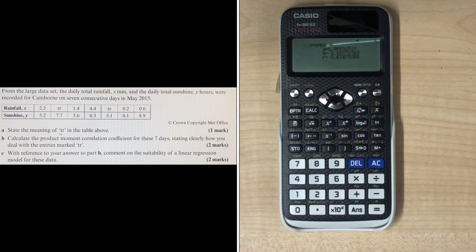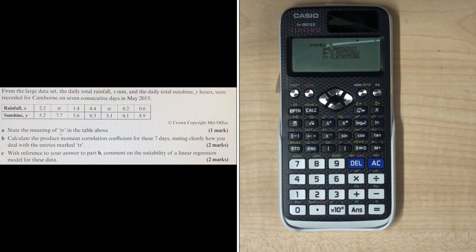Moving on to part C: with reference to your answer to part B, comment on the suitability of a linear regression model for these data. There are two marks available. For the first mark, write that R is not close to -1, hence there is a weak negative correlation. For the second mark, conclude that a linear regression model will not be suitable for this particular data.